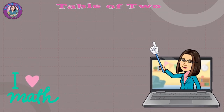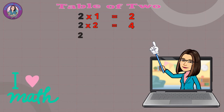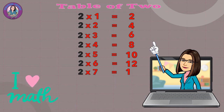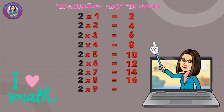Table of 2. 2 x 1 equals 2. 2 x 2 equals 4. 2 x 3 equals 6. 2 x 4 equals 8. 2 x 5 equals 10. 2 x 6 equals 12. 2 x 7 equals 14. 2 x 8 equals 16. 2 x 9 equals 18. 2 x 10 equals 20.